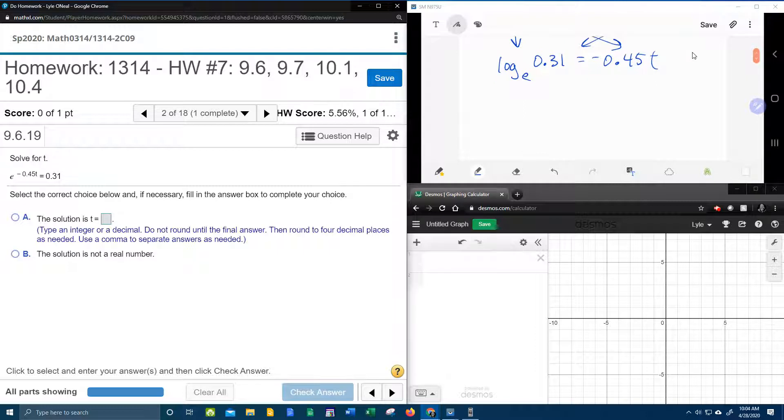Okay, so now it's time to remember a fun fact, that log base e is actually natural log. So we're going to replace log base e with natural log of 0.31, notice I can drop that leading zero if I feel like it, and I do, equals negative 0.45t.